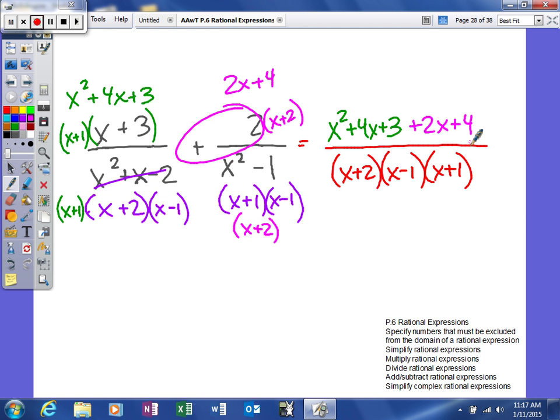So if you get in that habit, it will help you out. Again, we're going to combine like terms. So we'll get x squared plus 6x plus 7 over x plus 2, x minus 1, and x plus 1.